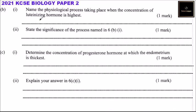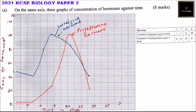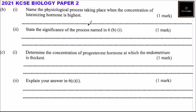Part b(i): Name the physiological process taking place when the concentration of luteinizing hormone is highest. Looking at the graph, luteinizing hormone is highest at 100. The physiological process taking place there is ovulation — the releasing of a mature egg from the ovary.